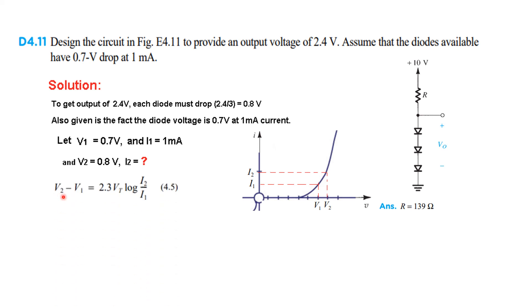So we use the derived equation that we had. Plugging in the values: 0.8, 0.7, 2.3. Vt is 25 millivolt. And log I2 over I1. Simplifying, we get this term.